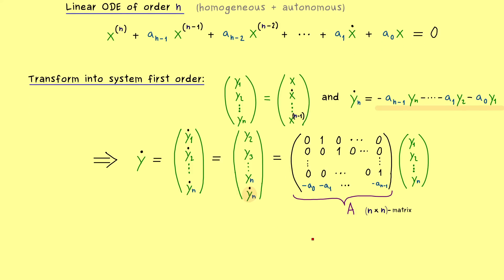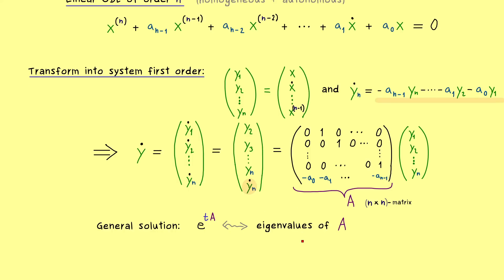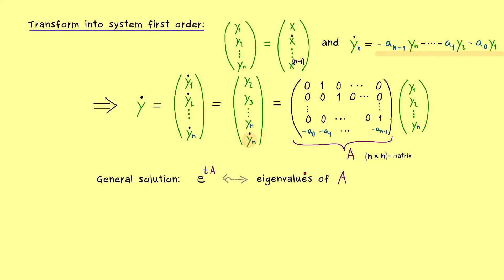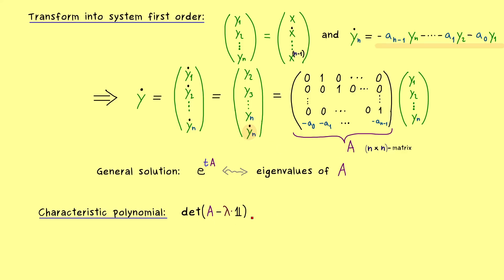This means we have no problem solving this system, and we immediately get all the solutions of our linear ODE of order n. As discussed, the key is calculating e to the power tA, which means we really have to calculate the eigenvalues of A. Using our linear algebra knowledge, the eigenvalues are exactly the zeros of the characteristic polynomial.